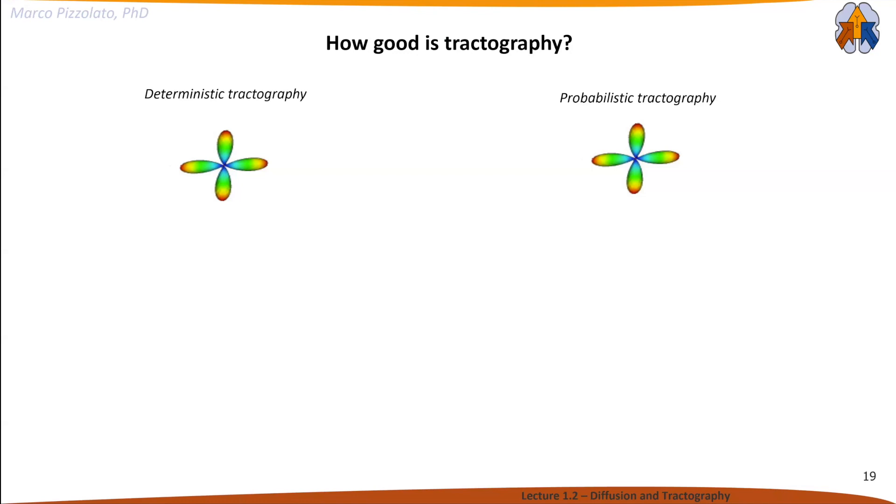How good is tractography? I'll mention deterministic tractography, where we take the fiber orientation distribution function, find the peaks, and use those to propagate tracts. There's also probabilistic tractography, which uses the fact that these objects are probability density functions. It samples from these functions and propagates many tracts according to the indicated probability.